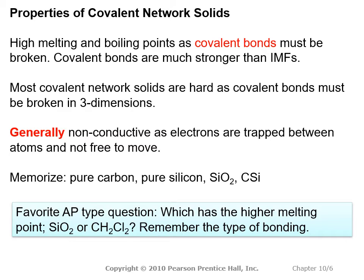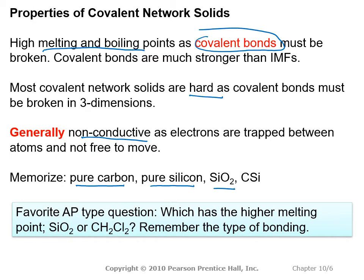The properties of covalent network solids: they have very high melting points and boiling points because the covalent bonds must be broken, and covalent bonds are much stronger than intermolecular forces. Most covalent network solids are hard because covalent bonds must be broken in three dimensions. Generally they're non-conductive because the electrons are trapped between atoms and not free to move. You need to memorize pure carbon, pure silicon, SiO₂, and SiC.